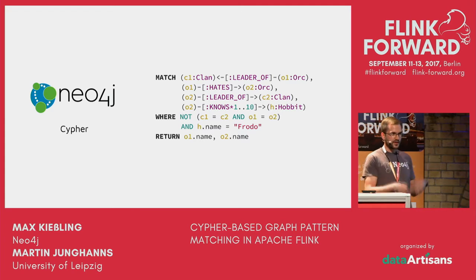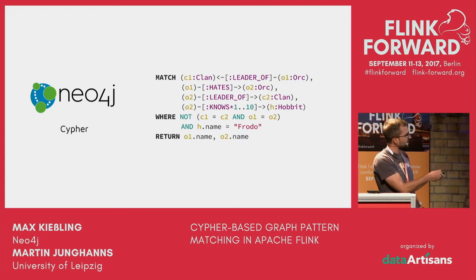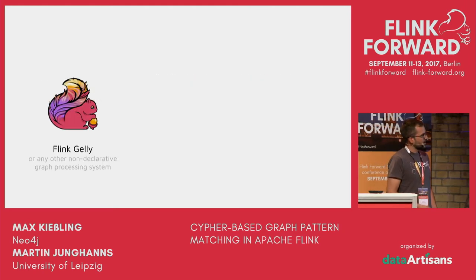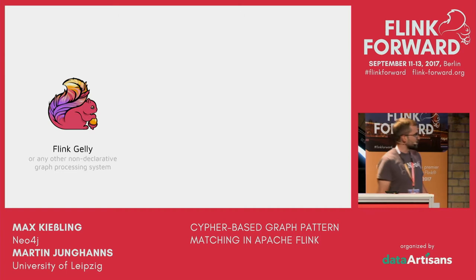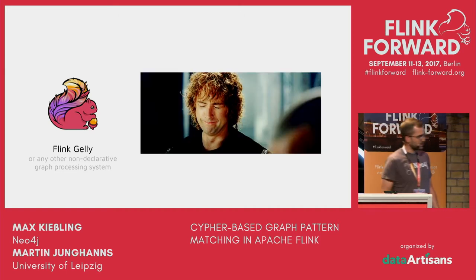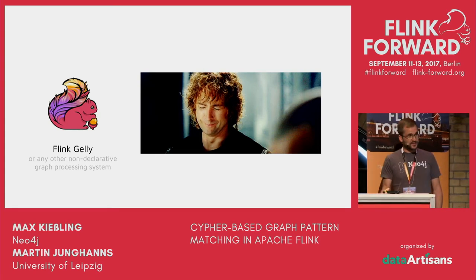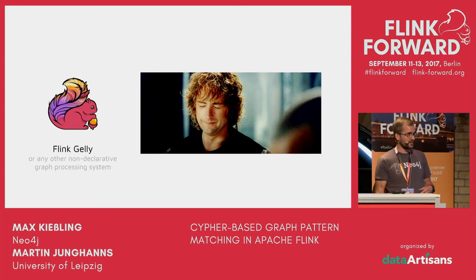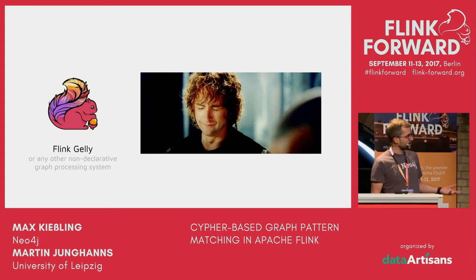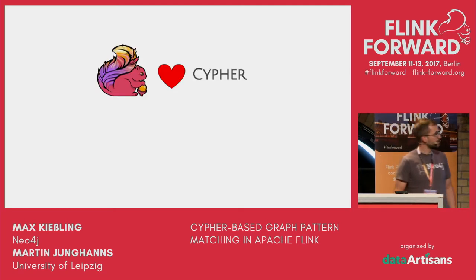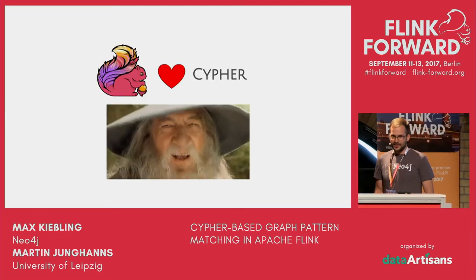In Neo4j's Cypher you would express that in the MATCH clause with a pattern — for example the first line looks for a vertex with a clan label and the leader of that clan. Let's imagine you are the data analyst for Sauron and have to implement this imperatively — probably this would be your reaction. So we thought it would be a good idea to bring Cypher and Flink together, so you have declarative query expressions on a distributed system.